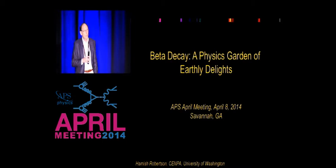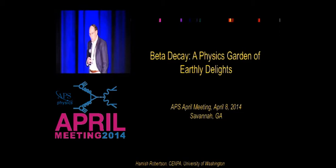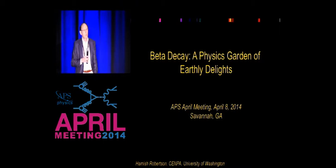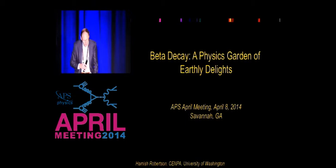What's really relevant and interesting for this session is that normally something discovered 100 years ago you would still not see on the leading edge of physics. But what we're going to hear today is that beta decay is still being used to look for physics beyond the standard model and to understand properties of neutrinos. So with that, I will ask the first speaker, Hamish Robertson, who is going to talk to us about beta decay — a physics garden of earthly delights.